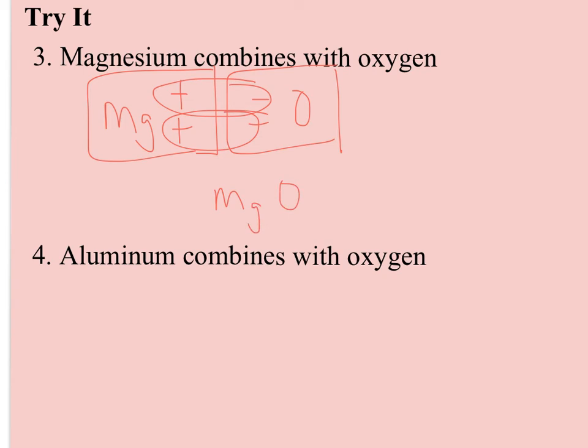Aluminum, this one gets a little messy because aluminum has three to give. Oxygen still only takes two, so I've got an extra electron, so I'm going to have to have a second oxygen to take that electron, but now I have oxygen shorting an electron, so I'm going to have to add another aluminum.